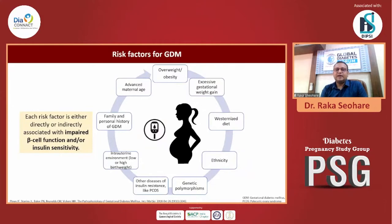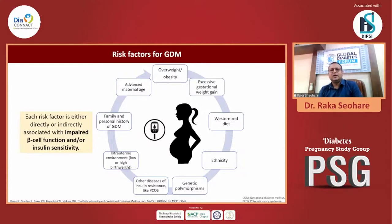What are the risk factors of GDM — why do some people get GDM and some don't? Each risk factor is either directly or indirectly associated with impaired beta cell function. Risk factors include advanced maternal age — because women are increasingly occupied in careers, the age of marriage is going up. Also overweight, obesity, excessive gestational weight gain, westernized diet, ethnicity, genetic polymorphism, and other diseases like PCOS. Family and personal history definitely have a great role because of genetic polymorphism.